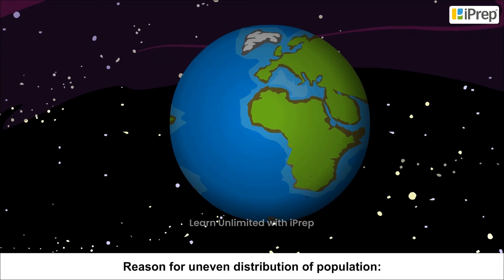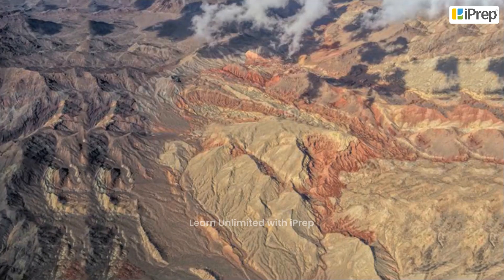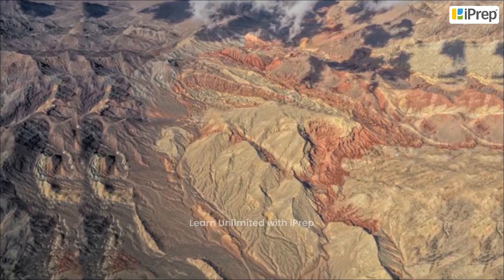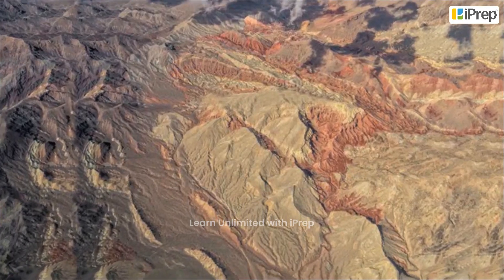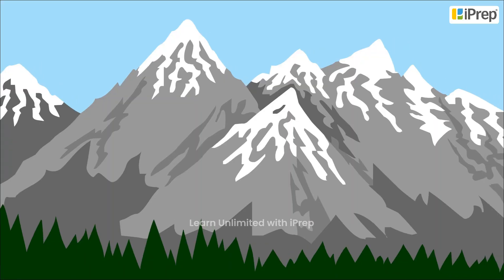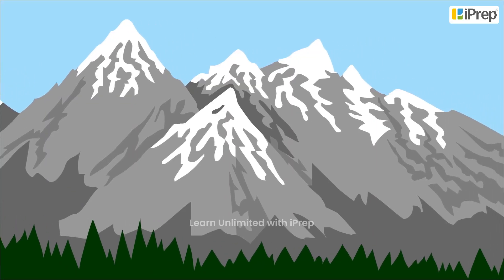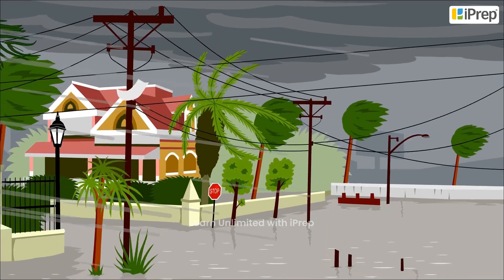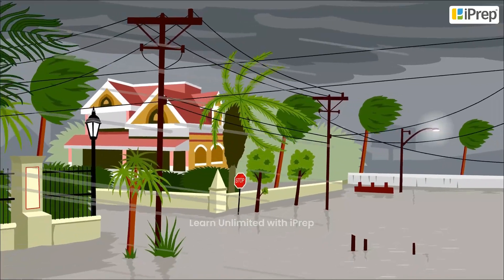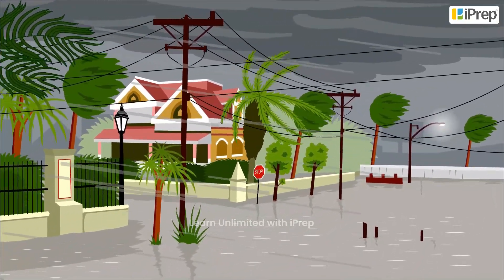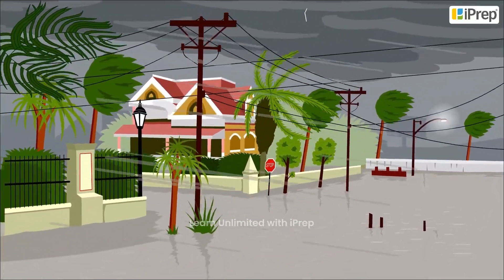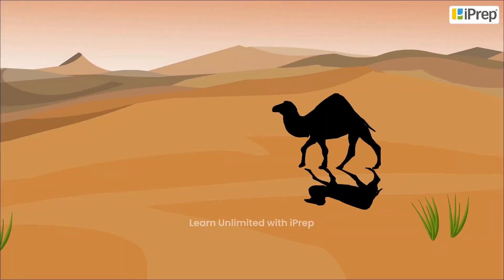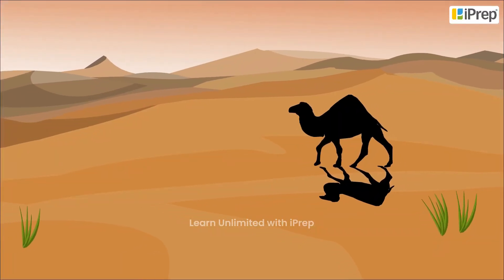Reasons for uneven distribution of population: irregular topography, steep slopes of the mountains, low-lying areas capable of waterlogging, desert areas, and thick forest.